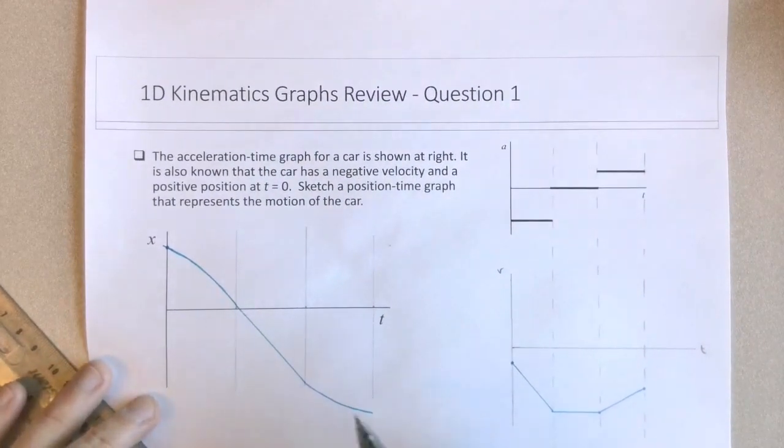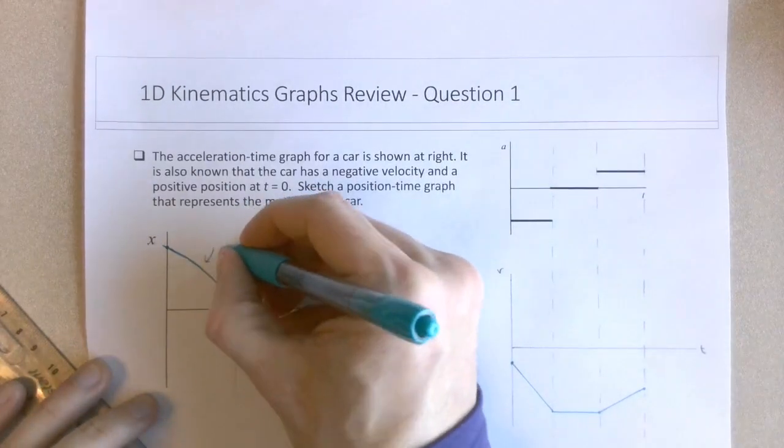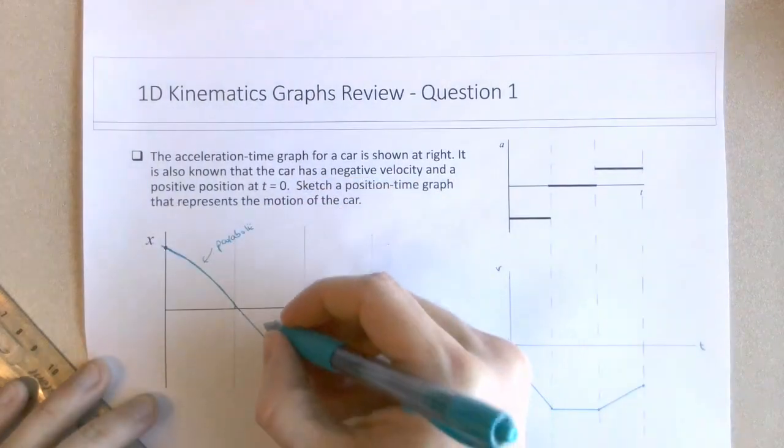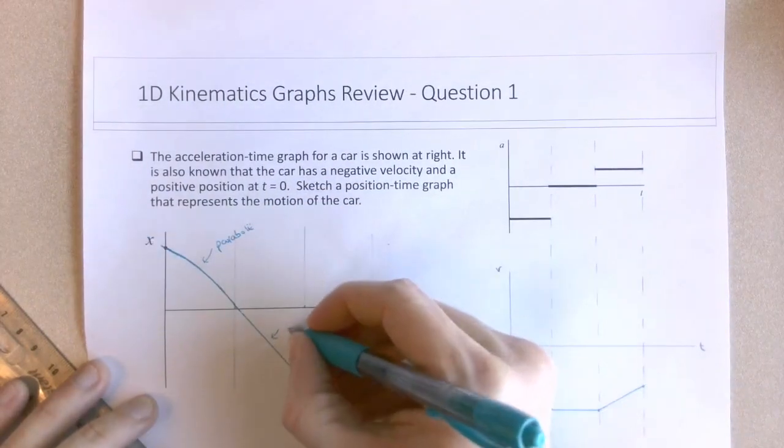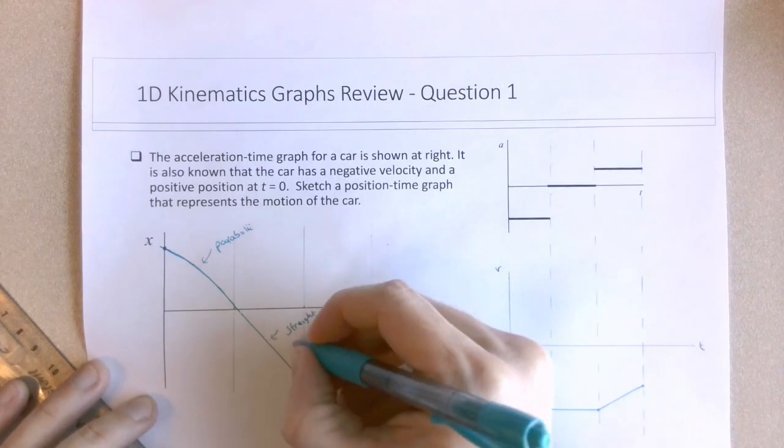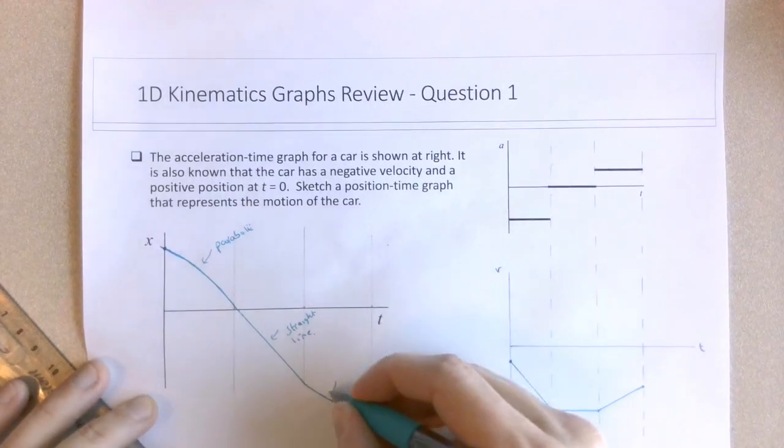I think we can make it somewhat more accurate at comparing slopes at the beginning to the end. But we should definitely have a parabolic shape here. This should be a straight line. And then another parabolic section here.